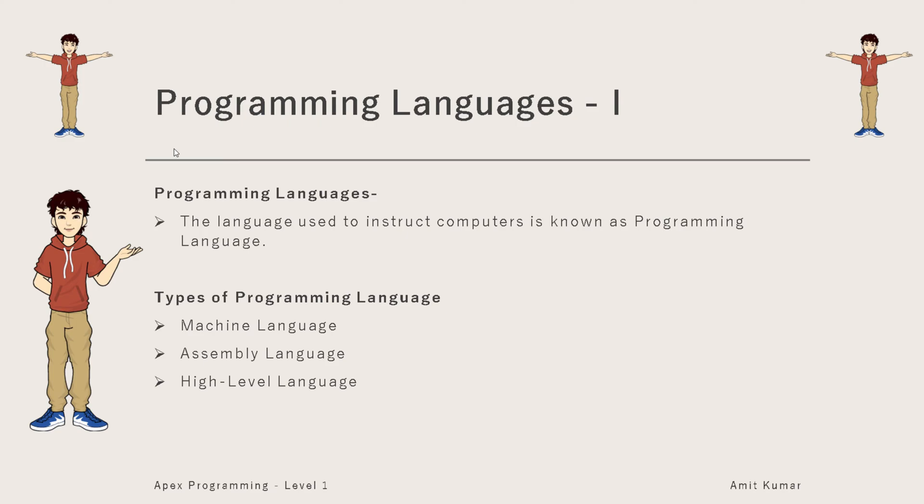We know language is nothing but a medium to communicate with anyone, and similarly a language that is used to communicate with computers is known as programming language. With the help of these languages we can provide instructions to computers so that computers can perform on those instructions. There are different types of programming languages available, of which the important ones are machine language, assembly language, and high-level language.